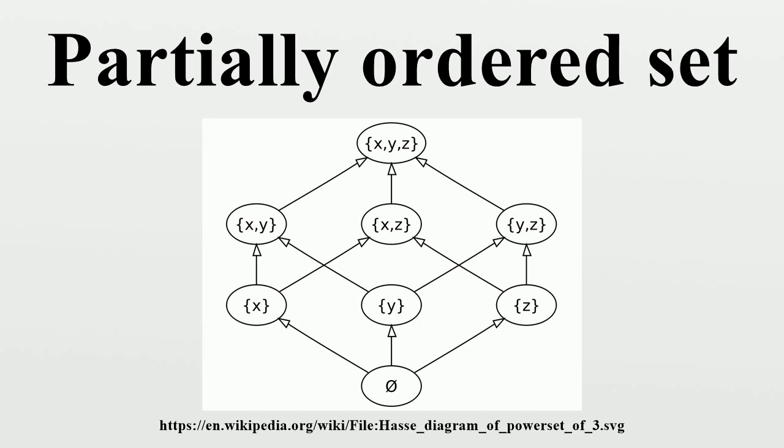Mappings between partially ordered sets: Given two partially ordered sets (S, ≤) and (T, ≤), a function f: S → T is called order-preserving, or monotone, or isotone, if for all X and Y in S, X ≤ Y implies f(X) ≤ f(Y). If (U, ≤) is also a partially ordered set, and both f: S → T and g: T → U are order-preserving, the composition g ∘ f: S → U is order-preserving too. A function f: S → T is called order-reflecting if for all X and Y in S, f(X) ≤ f(Y) implies X ≤ Y. If f is both order-preserving and order-reflecting, then it is called an order-embedding of S into T. In the latter case, f is necessarily injective, since f(X) = f(Y) implies X ≤ Y and Y ≤ X.